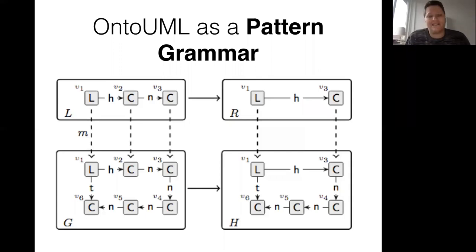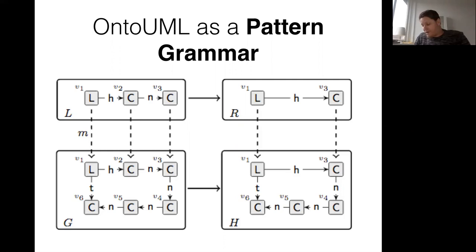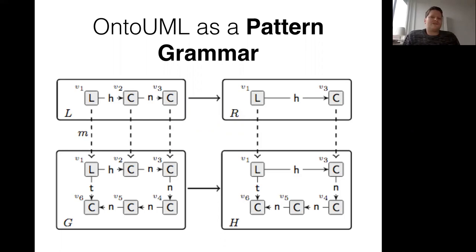The abstract syntax of OntoUML is defined as a set of graph rewriting rules. Using this notion of graph transformations, we have been applying them to deal with another important and neglected problem in conceptual modeling: complexity management of large conceptual models. In real-world projects with government and organizations, we found models that were very large and people couldn't understand them. We used these ontological notions to provide complexity management mechanisms for such large models.